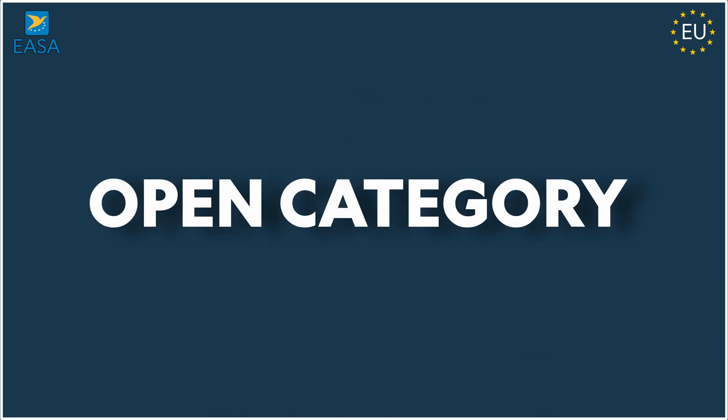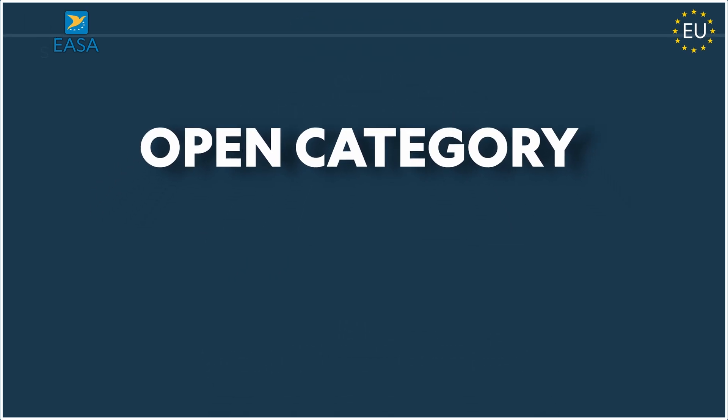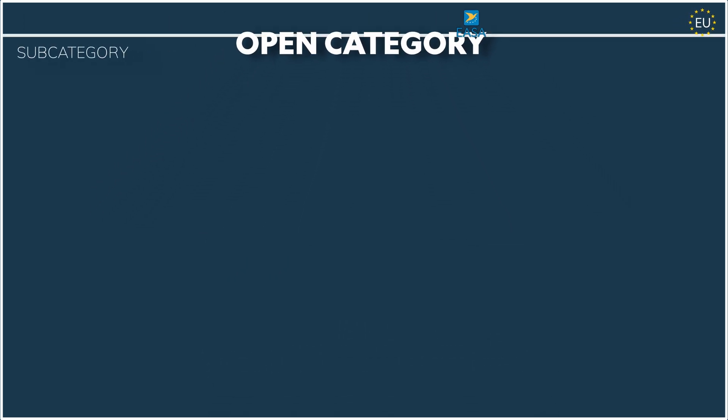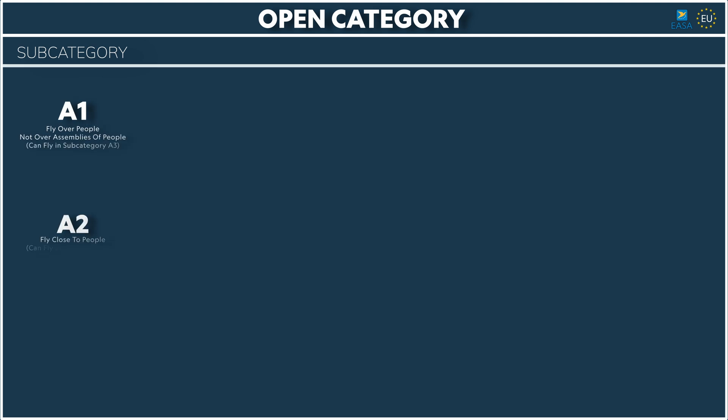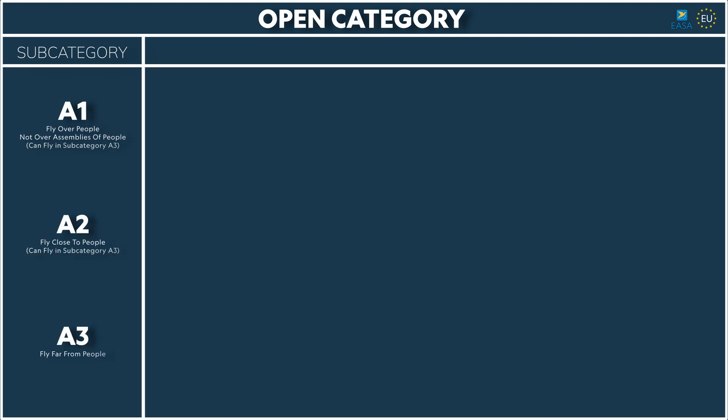The open category is split into three subcategories: A1, A2, and A3. According to EASA, subcategory A1 is described as 'fly over people but not over an assembly of people,' A2 as 'fly close to people,' and A3 as 'fly far from people.' Each of these three subcategories has different regulations.